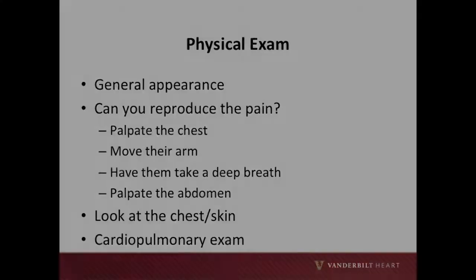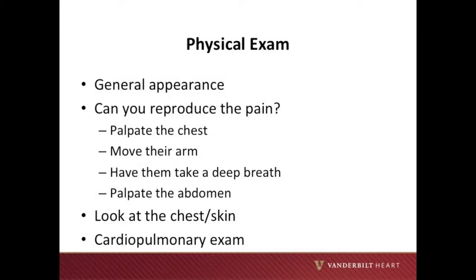We will now review physical exam findings in the patient with suspected ACS. When examining a patient with suspected ACS, focus on the general appearance: is the patient currently experiencing pain? Are they diaphoretic? Are they short of breath? Are you able to reproduce the pain? Palpate the area of the chest where the pain is located, move the arm and evaluate for a musculoskeletal component, have them take a deep breath or cough to evaluate for a pleuritic component, palpate the abdomen for potential intra-abdominal pathology that has been mistaken as chest pain, look at the chest and the skin, and then finally, do a thorough cardiopulmonary exam.